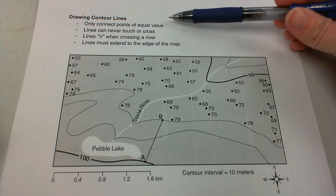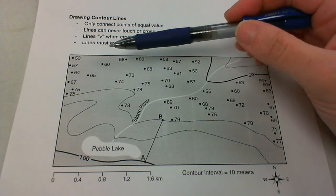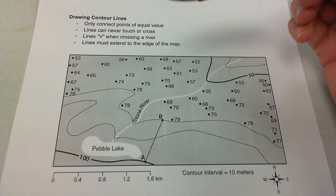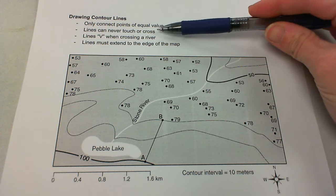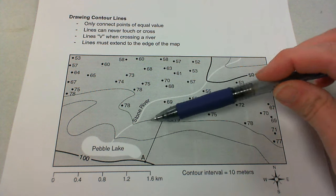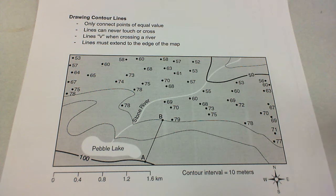So the rules: you can only connect points of equal value. So if you look at these dots, you can't go from a 73 to a 68. One line is one value. The lines can never touch or cross. There's a couple already drawn on here and you notice that they do not touch each other, they do not cross. Because they are representing different values, they can't touch each other.